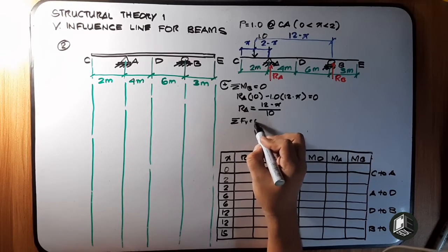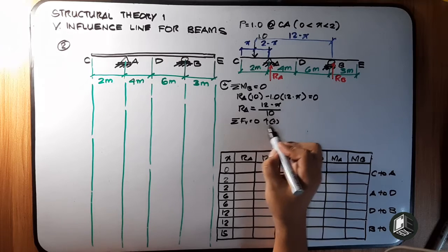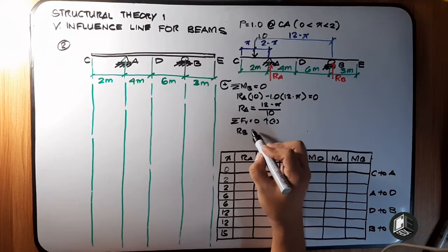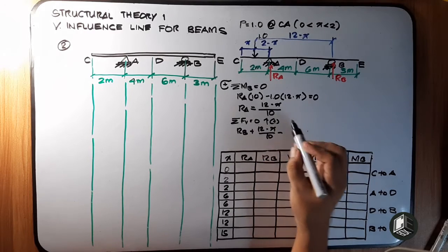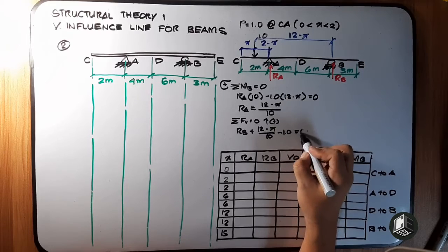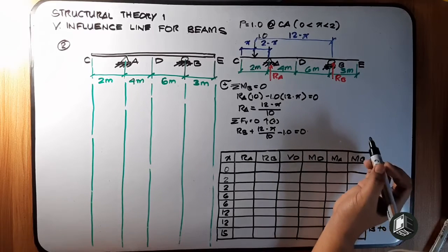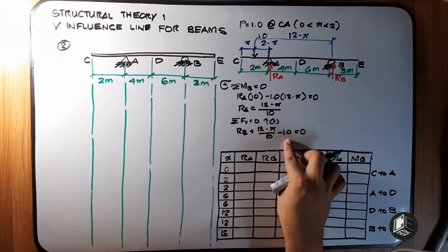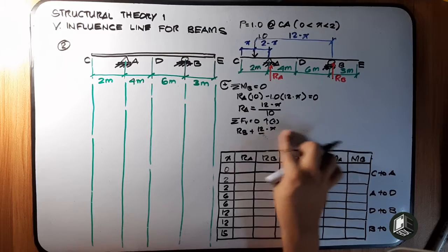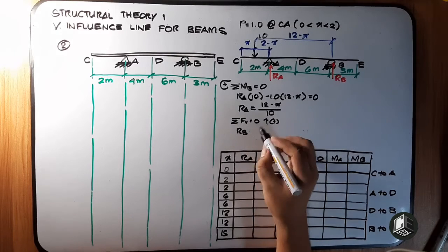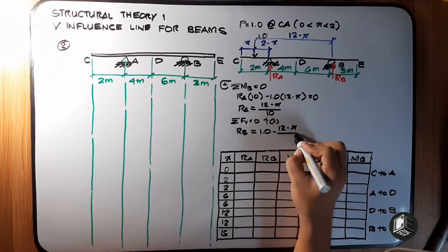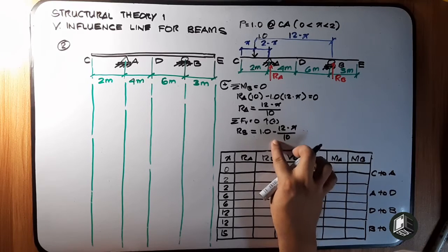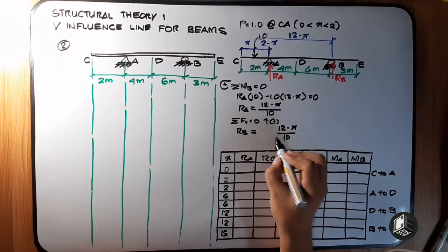By summation of vertical forces equal to 0, upward positive: RB plus (12 minus X over 10) minus 1.0 equals 0. Simplifying, RB equals 1.0 minus (12 minus X) over 10.